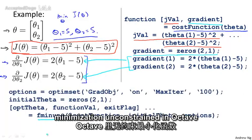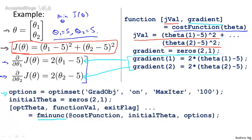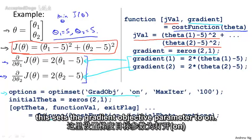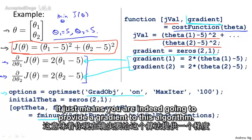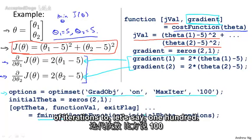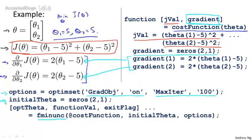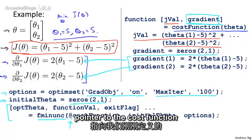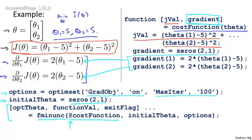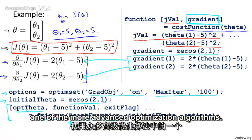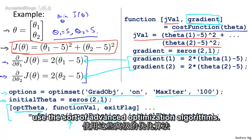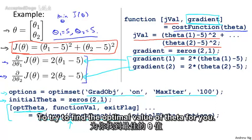Having implemented this cost function, you can then call the advanced optimization function called fminunc — it stands for Function Minimization Unconstrained in Octave. You set a few options: this data structure stores the options you want. Set GradObj to on, which means you are indeed going to provide a gradient to this algorithm, and set the maximum number of iterations to 100. Give it an initial guess for theta as a two-by-one vector. Then this command calls fminunc — the @ symbol represents a pointer to the cost function — and it will use one of the more advanced optimization algorithms, automatically choosing the learning rate alpha, to find the optimal value of theta.